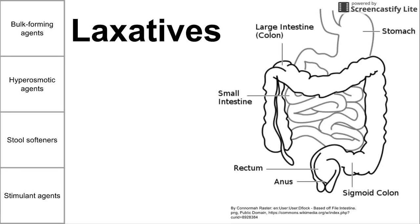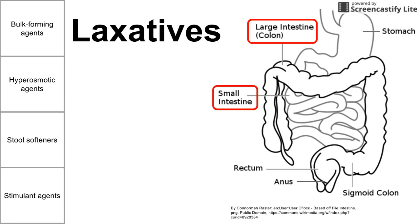This is a short video on the four types of laxatives. They're listed across the left there: bulk forming agents, hyperosmotic agents, stool softeners, and stimulant agents. On the right, we have a picture of the GI tract. It's important to emphasize that laxatives primarily work on the large intestine — the colon — and the preceding small intestine. We'll cover the mechanism of action for each of these four types and give some examples.